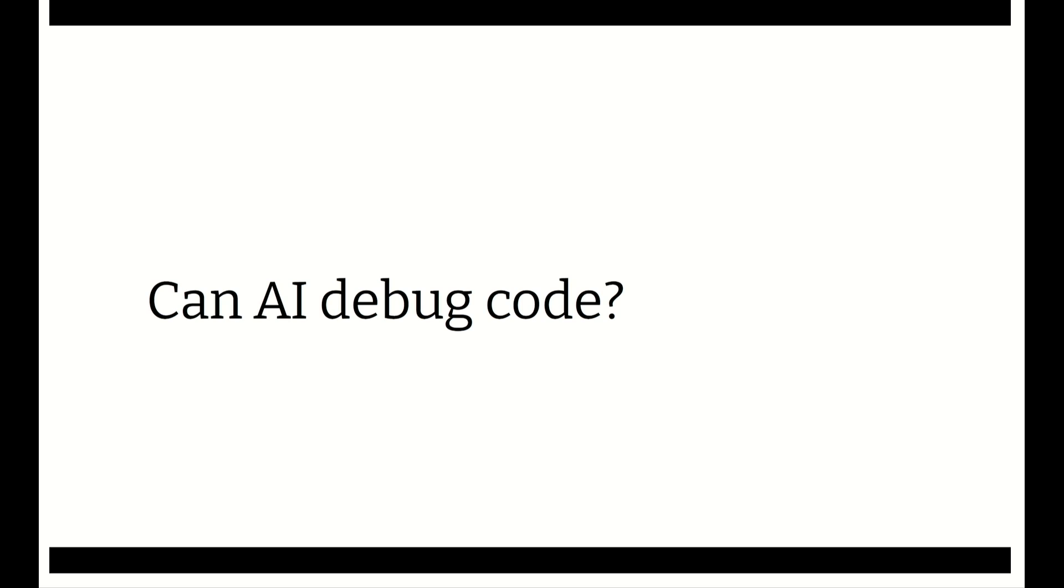Similarly, with the question of, can AI debug code? We've seen a lot of anecdotal evidence of people saying, well, yeah, it produced this wrong code, but then I go and I tell the system, hey, this code was wrong, it failed this test, and the system comes back and fixes it. That's debugging. We can do it. The models seem to be able to do it, too.